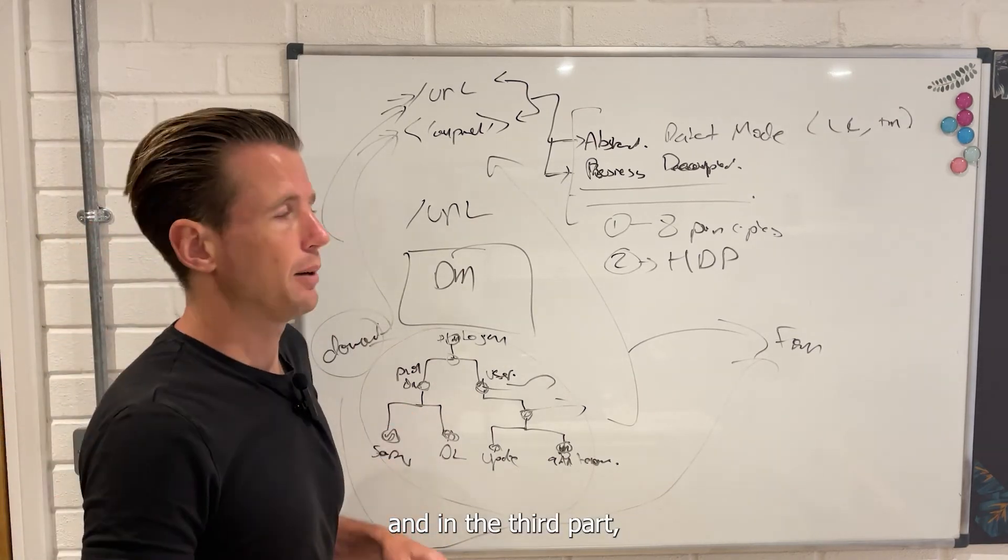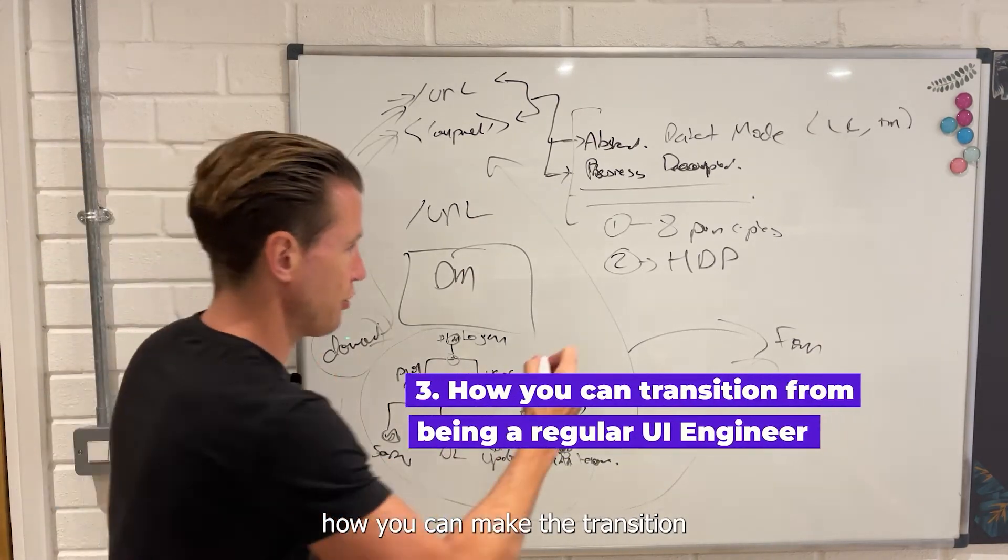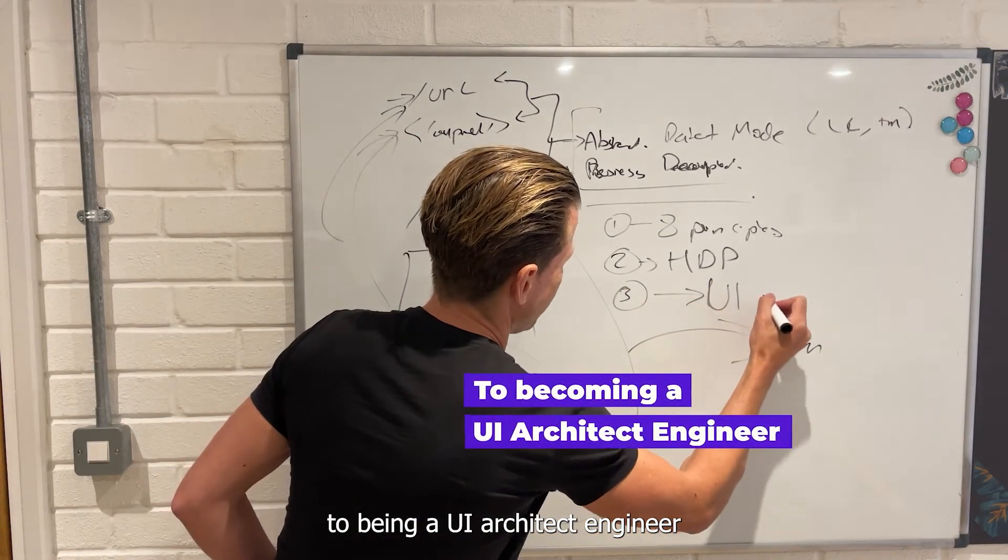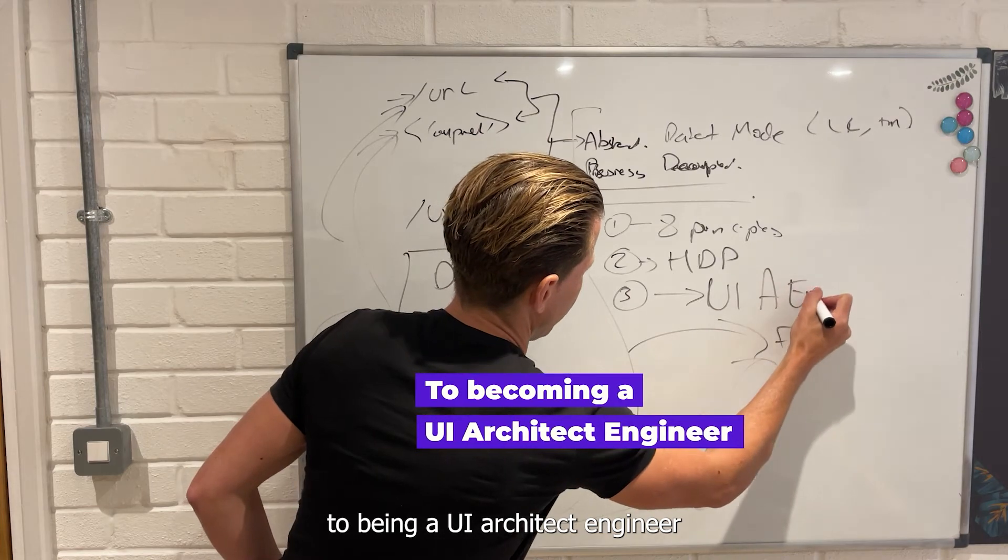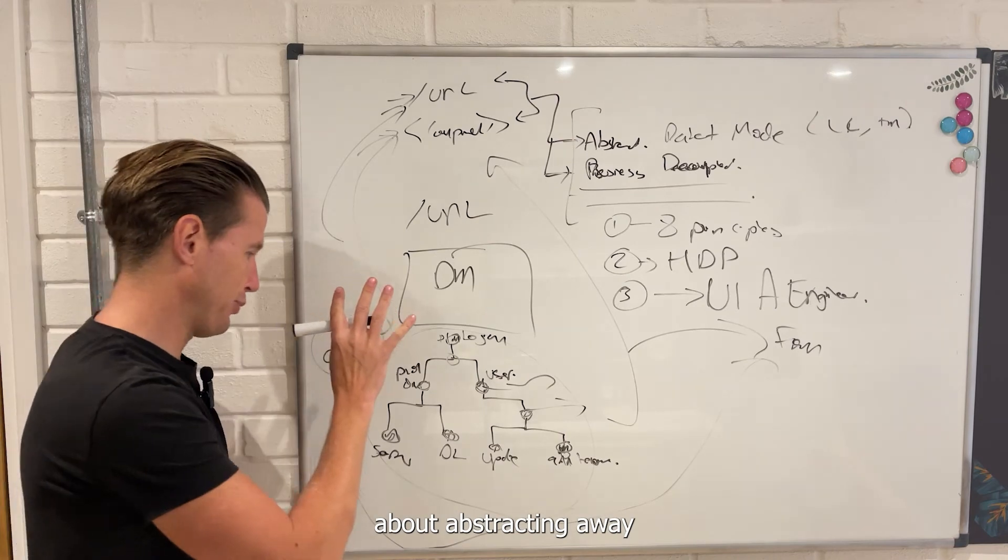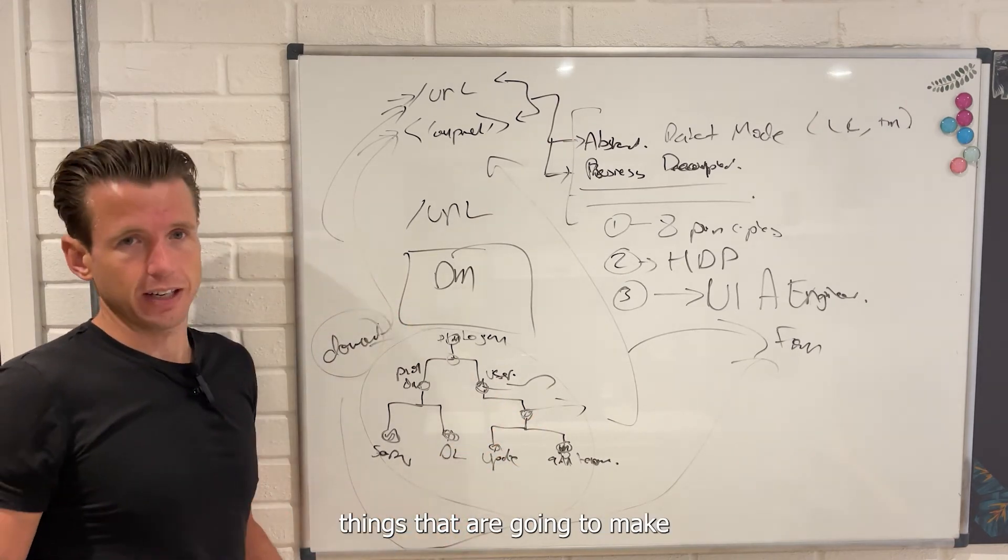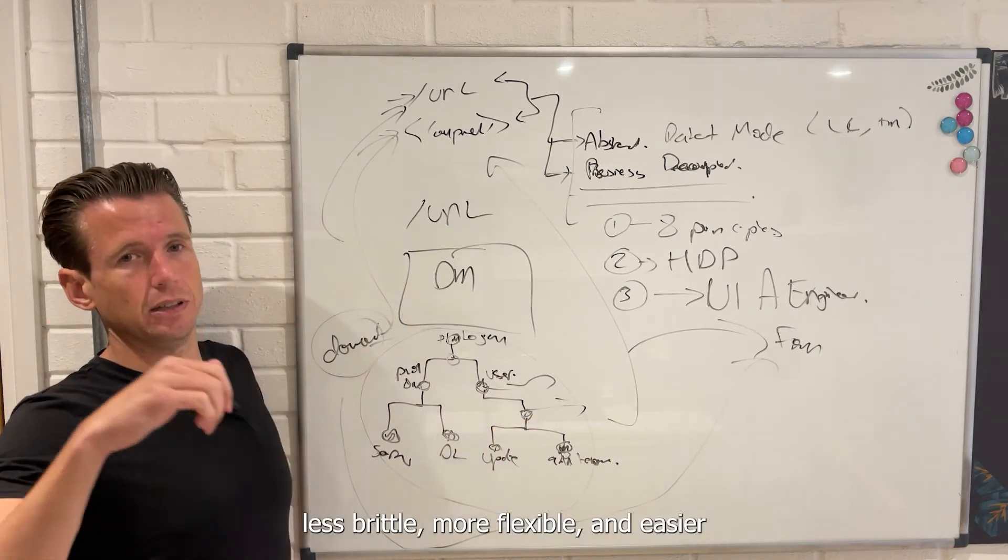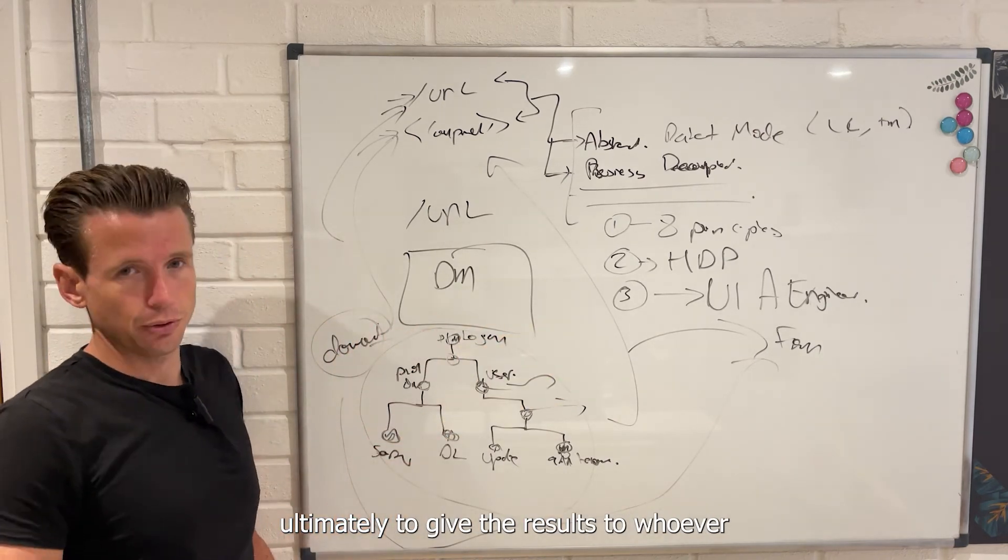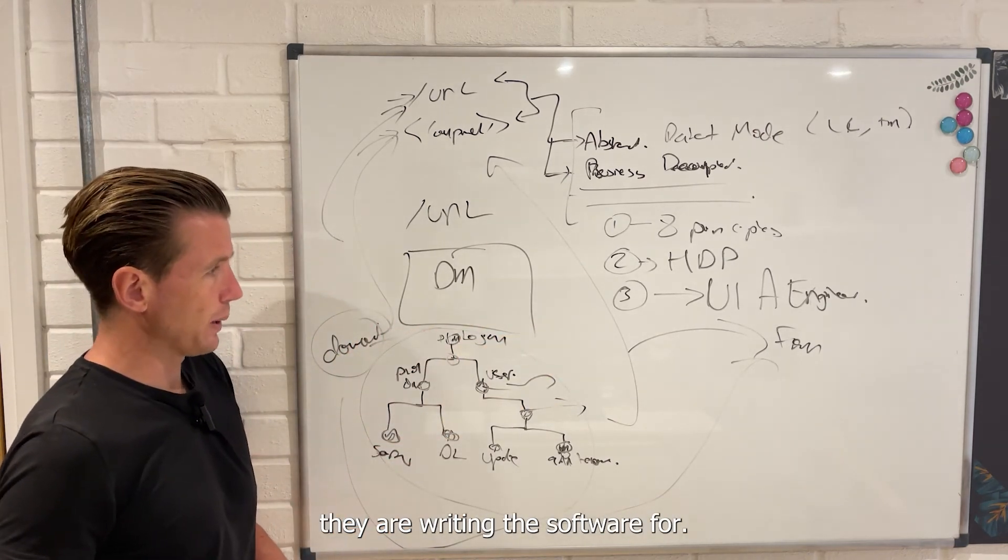And in the third part, I'm going to teach you how you can make the transition from being a regular engineer to being a UI architect engineer, who begins thinking about abstracting away things that are going to make the software less brittle, more flexible, and easier, ultimately, to give results to whoever they are writing the software for.